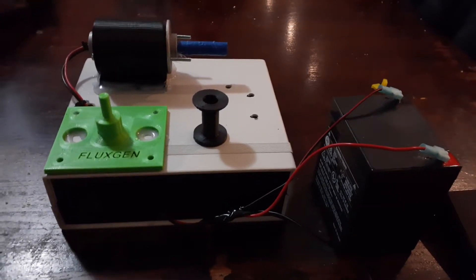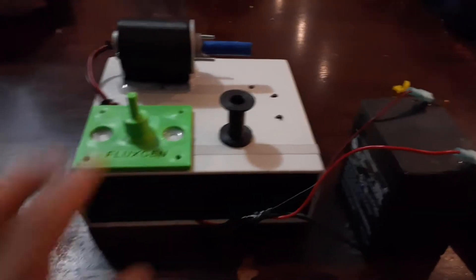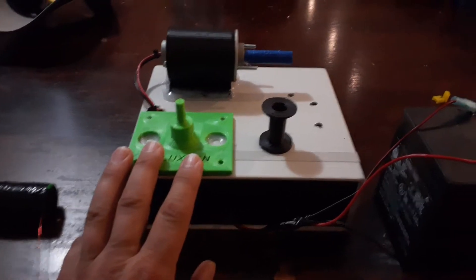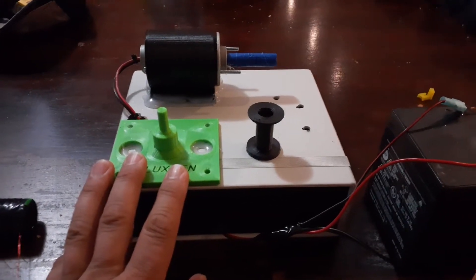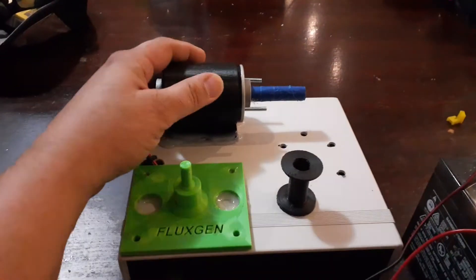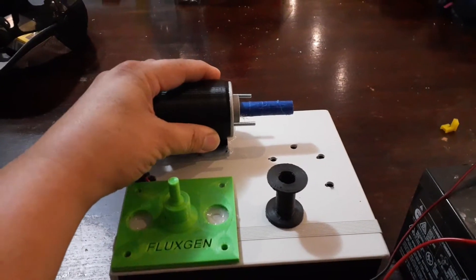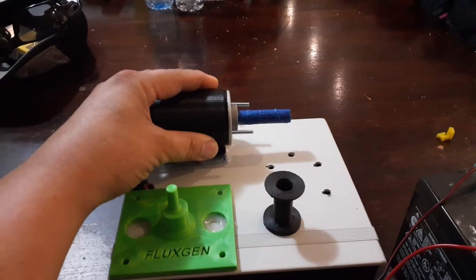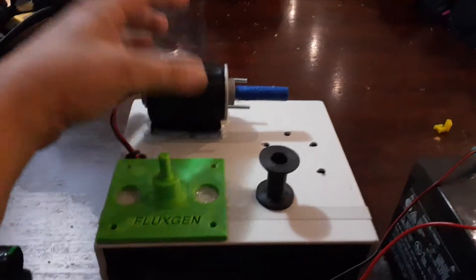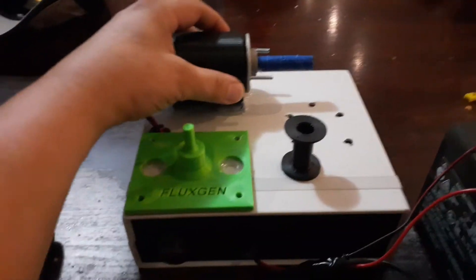So what I did was I built myself a coil winder. I picked up a 12 volt DC motor on Amazon, cost like $22 Canadian. It's a good torquey motor, a good size motor for what I paid.